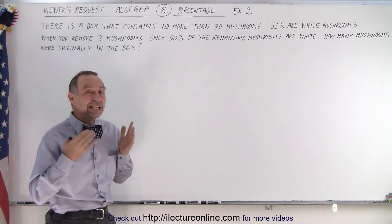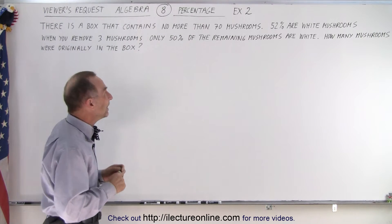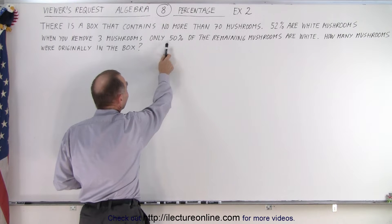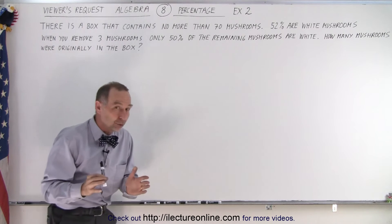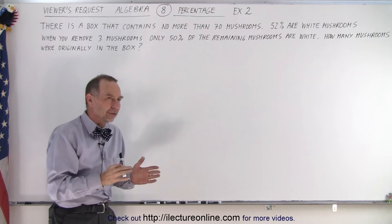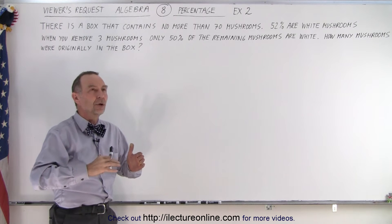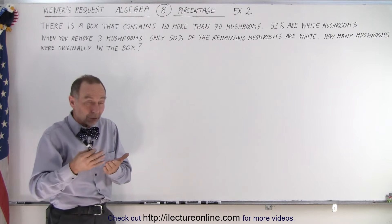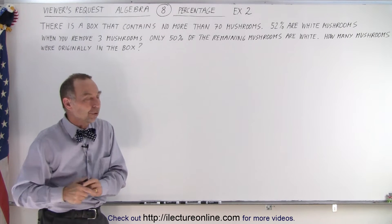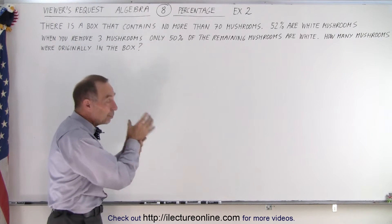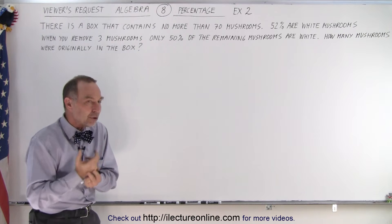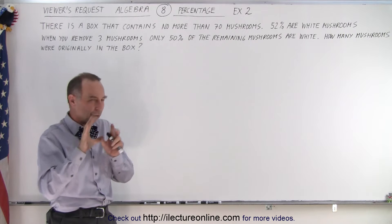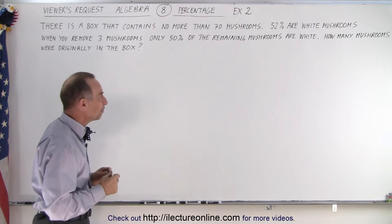So here it's the same approach. You need to come up with a whole number and then realizing that after you remove three mushrooms then half of the remaining mushrooms are white. So somehow to get to multiply a number times 50% to get a whole number it must be an even number, which means that whatever number you begin with, when you remove three mushrooms you have to have an even number. So those are kind of the restrictions when we think about it.